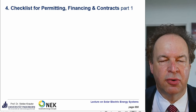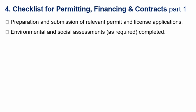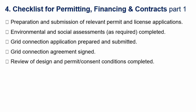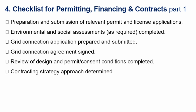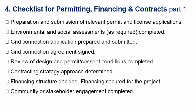The checklist for permitting and financing contracts: preparation and submission of relevant permit and license applications; environmental and social assessments are completed; grid connection application prepared, submitted, and agreement signed; review of design and permit consent conditions completed; contracting strategy determined; financing structure decided and secured; community or stakeholder engagement completed. Solar PV tender documentation prepared — you give all the technical specifications: how much hail resistance is required, what wind loads there are, whether any special coating is needed for dust accumulation, and how big the foundations have to be depending on the ground.